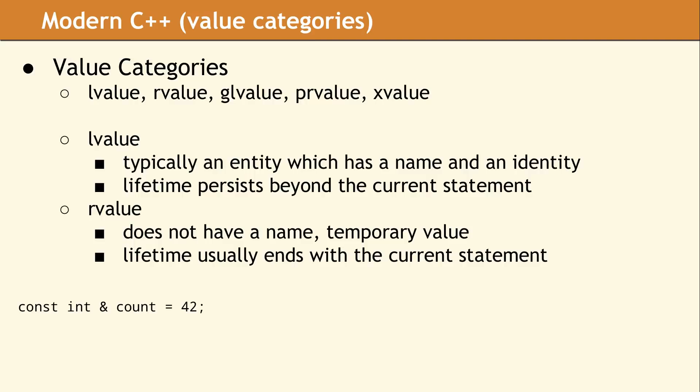There are relationships between the different value categories, but for the most part, knowing the distinction between L-values and R-values will take you a long way. Value categories are partly necessary because the standard defines them and refers to them everywhere. More importantly, as a C++ developer, you need to understand value categories because they are the foundation for understanding move semantics, which is an extremely powerful tool. A nice way to think about value categories is like learning how the different pieces in the game of chess can be moved around the board.